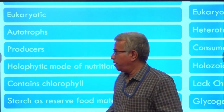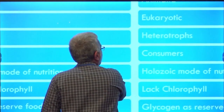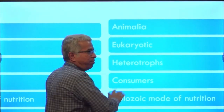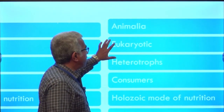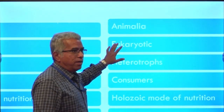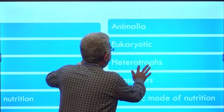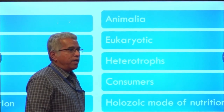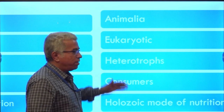The members of kingdom Plantae contain chlorophyll, and starch is the reserve food material. These are the characteristics of kingdom Plantae. Now let us go to kingdom Animalia.